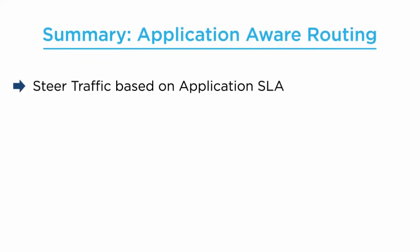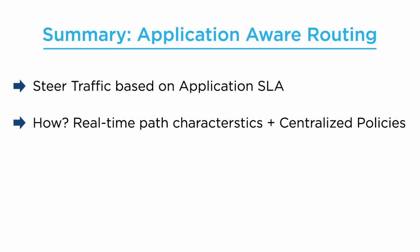In summary, with application-aware routing, you can steer traffic based on the SLA requirements of the application. How we do it in Viptela solution is by maintaining real-time characteristics of loss, latency, and jitter of each path and then applying policies on the centralized controller, such that critical traffic is always steered onto the most reliable link.